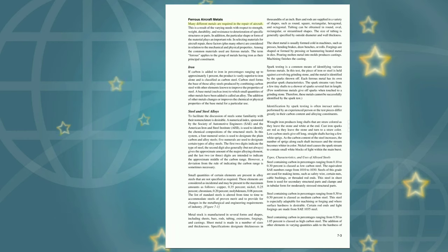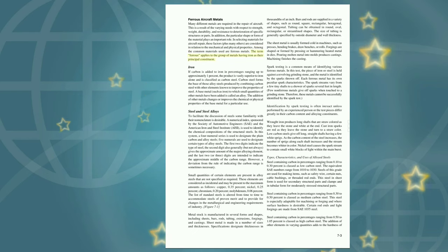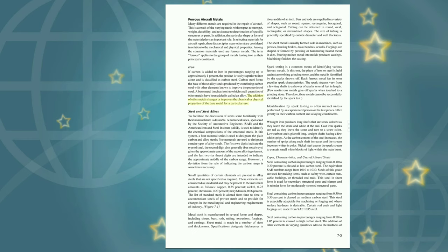Ferrous aircraft metals: Many different metals are required in the repair of aircraft as a result of varying needs with respect to strength, weight, durability, and resistance to deterioration of specific structures or parts. The term ferrous applies to the group of metals having iron as their principal constituent. If carbon is added to iron in percentages ranging up to approximately 1%, the product is vastly superior to iron alone and is classified as carbon steel. Carbon steel forms the base of those alloy steels produced by combining carbon steel with other elements. A base metal such as iron to which small quantities of other metals have been added is called an alloy. The addition of other metals changes or improves the chemical or physical properties of the base metal.